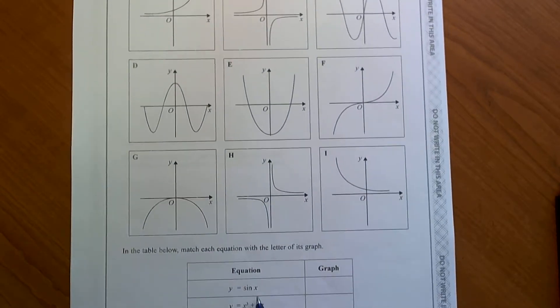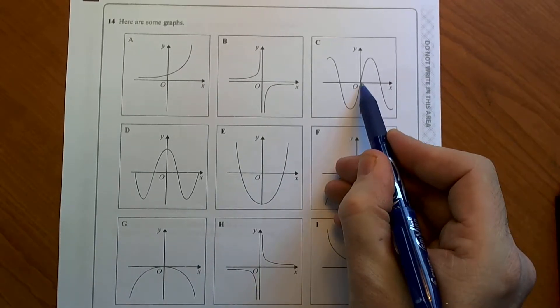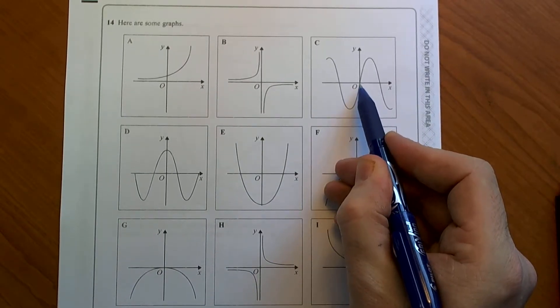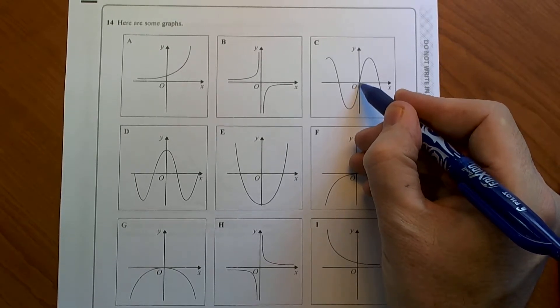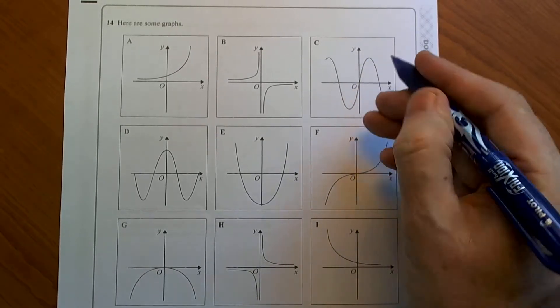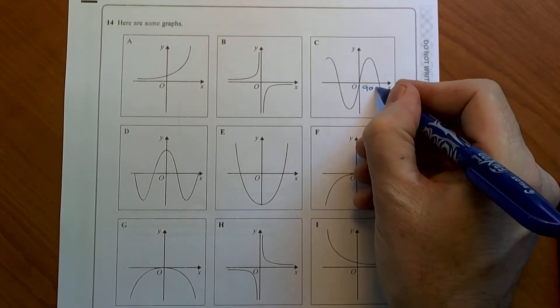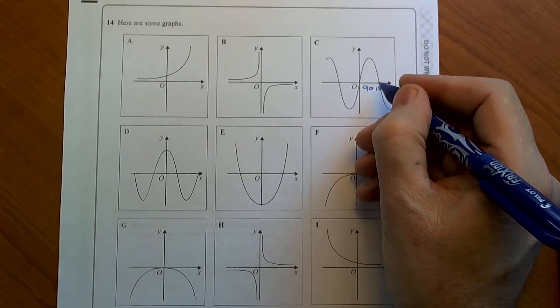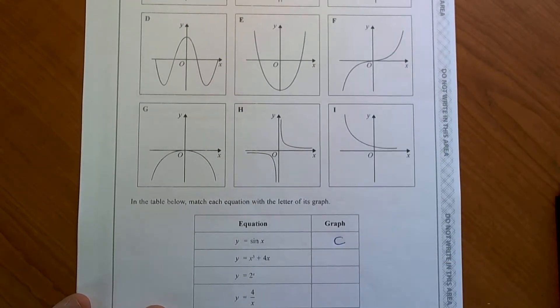If we're looking for the first one, y equals sin x, this graph here C is going to be sin x. Because sin x at 0 degrees is 0, at 90 degrees it goes to its maximum, and then at 180 degrees it comes back to 0. So the first graph y equals sin x is graph C.